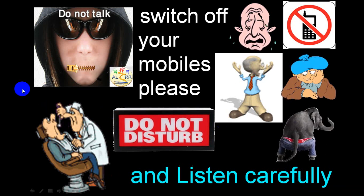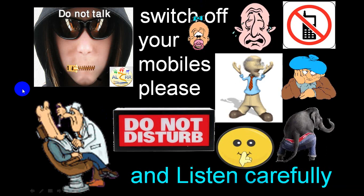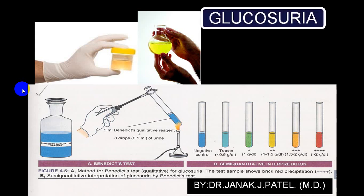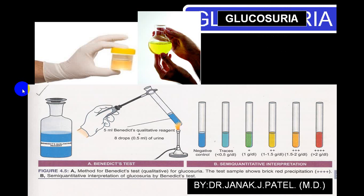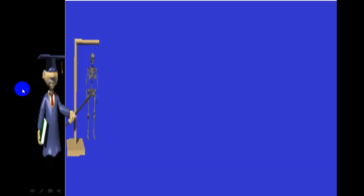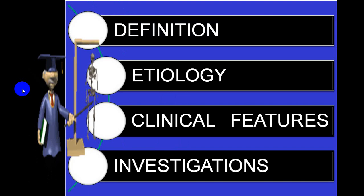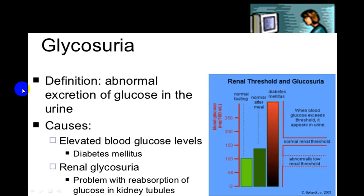Today we are starting with another topic we call glycosuria — also called glucosuria. Urine examination is very important. We'll be discussing its definition, etiology, clinical features, and investigation. By definition, glycosuria means abnormal excretion of glucose in urine.